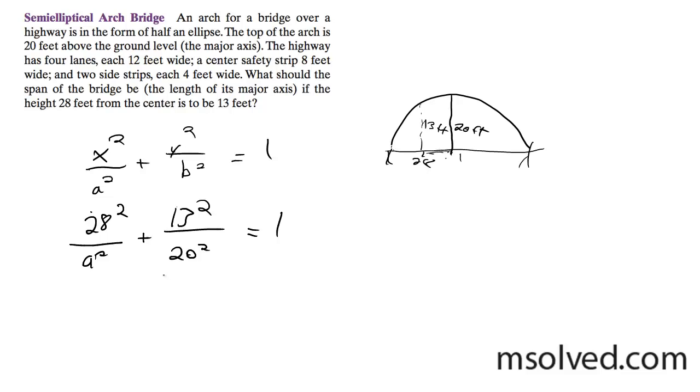So this right here is equal to 0.4225. So then we get 28 squared over a squared is equal to 1 minus 0.4225.